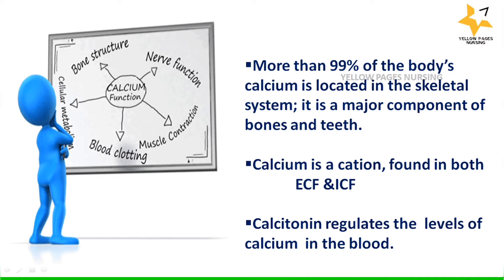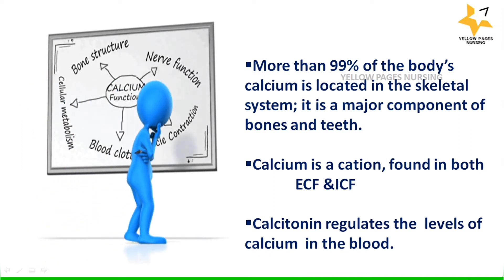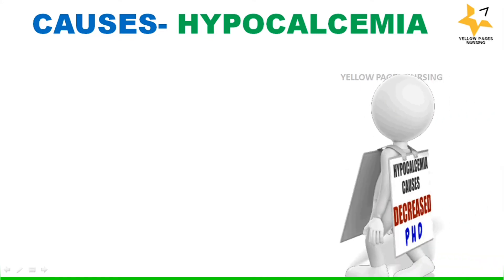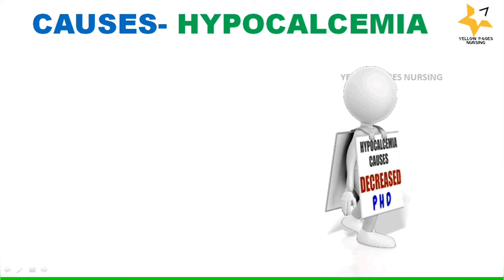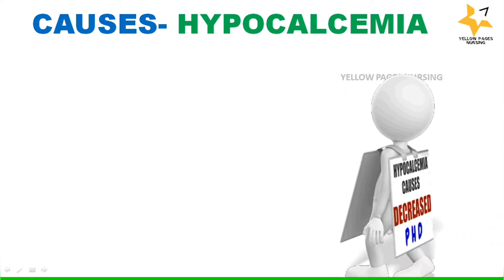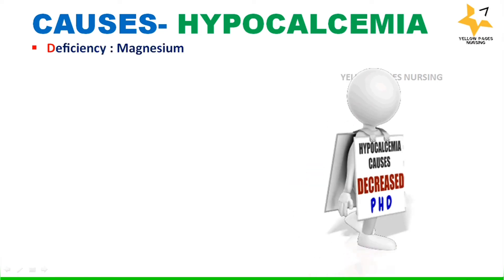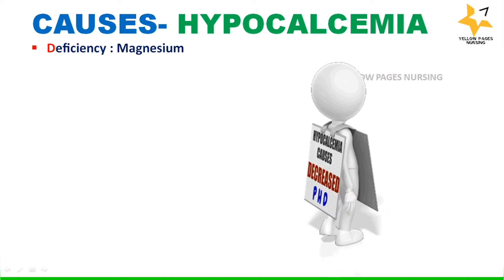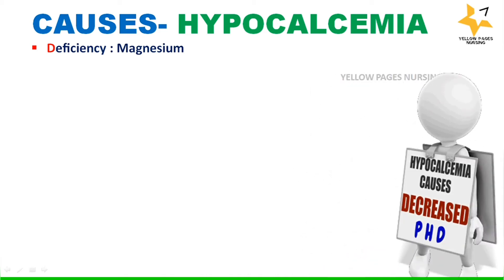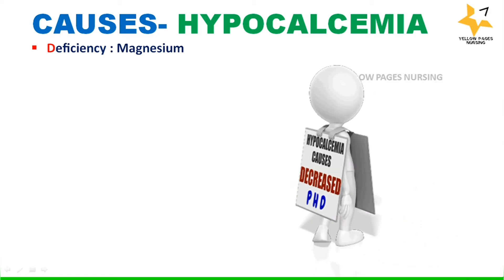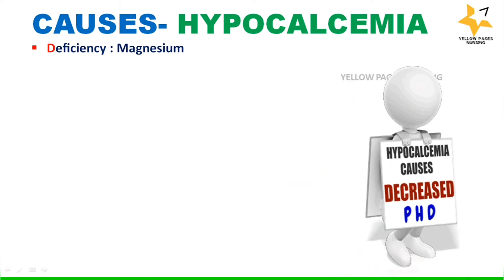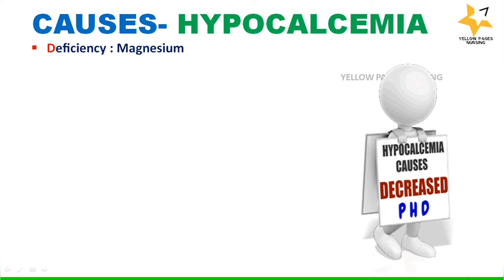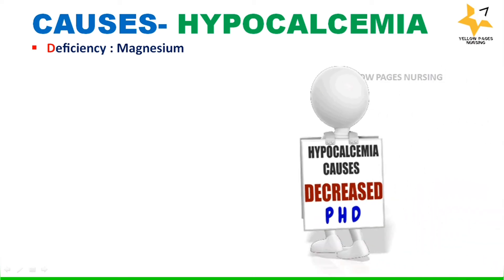Other functions of calcium include blood clotting and cellular metabolism. The causes of hypocalcemia are categorized under the mnemonic 'decreased PHD.' The first is deficiency of magnesium — magnesium is required for the production and release of parathyroid hormone. When magnesium is too low, production of parathyroid hormone is also affected, reducing blood calcium levels and resulting in hypocalcemia, defined as secondary because it occurs as a consequence of hypomagnesemia.